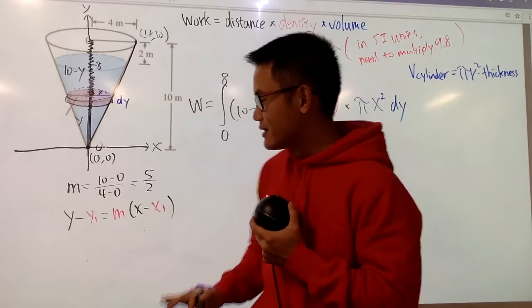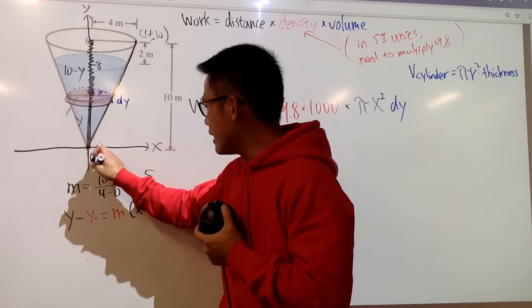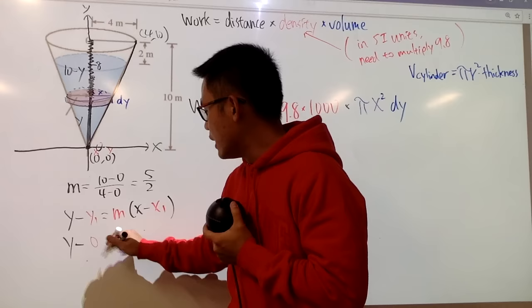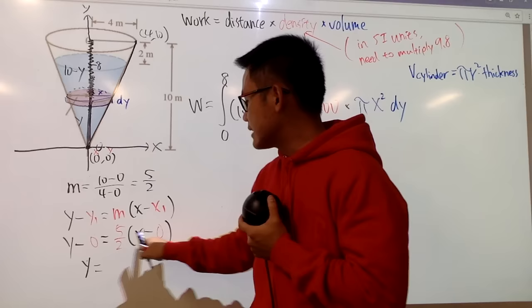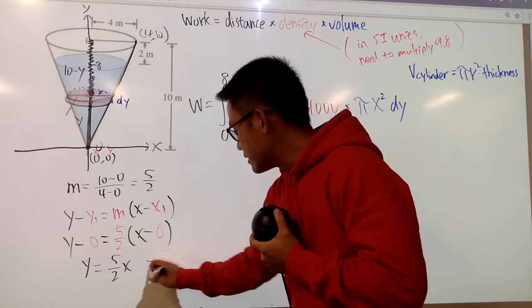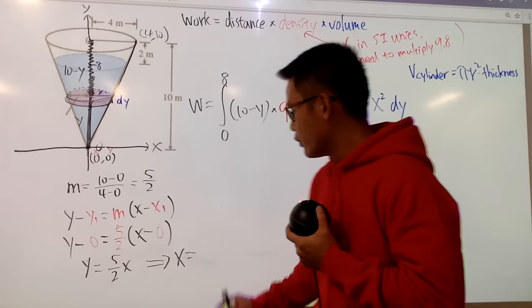Anyway, let me label this one as (x1, y1). So now you see, y is just y minus y1, which is 0, equal m is 5 half, times x is just x, minus x1, which is 0, and now this is just y equal to this times not only, which is 5 over 2x. But I want to isolate the x, so in another word, x will be, after we multiply both sides by 2 over 5, we get x equal 2 over 5y.